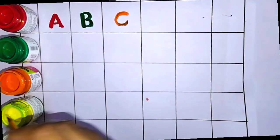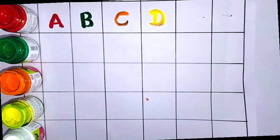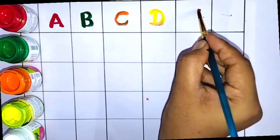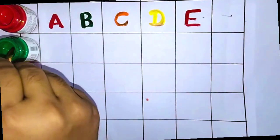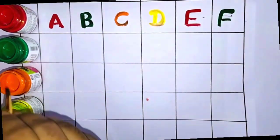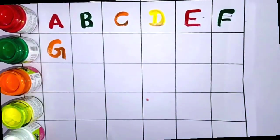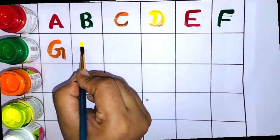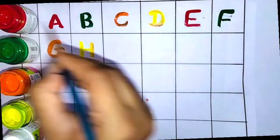C. C for car. D. D for dog. E for elephant. F for face. G for goat. H for horse.